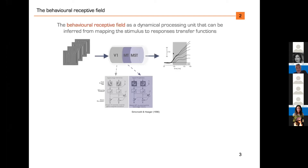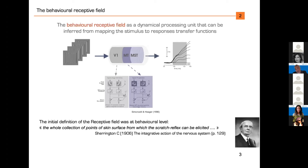I'd like to remind people that the original definition of a receptive field was put forward by Sir Sherrington in the early 20th century. He defined it as the whole collection of points of skin surface from which the scratch reflex can be elicited in dogs. So originally, before it became defined at the neuronal level, it was a definition set at behavioral level — the sensory input and the spatial-temporal structure of the sensory input that drives a behavioral response.